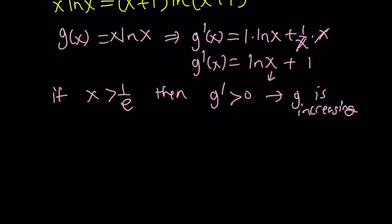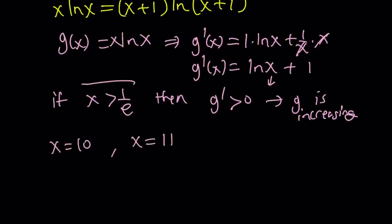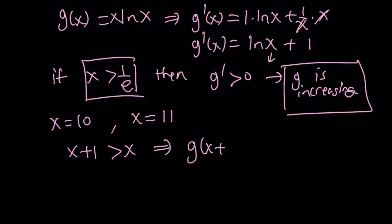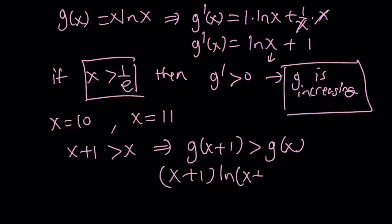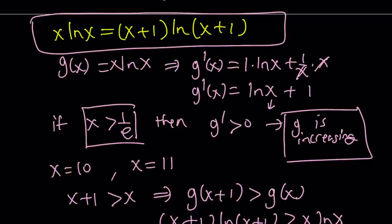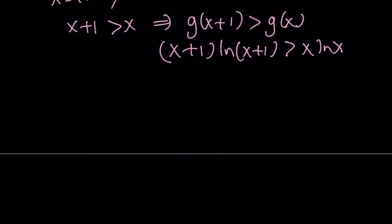Since g is an increasing function on that interval, and x+1 > x, this implies g(x+1) > g(x). By our definition of g, this means (x+1)·ln(x+1) > x·ln(x). Therefore these two values can never be equal on our interval, which means there is no maxima or minima for f on our interval.